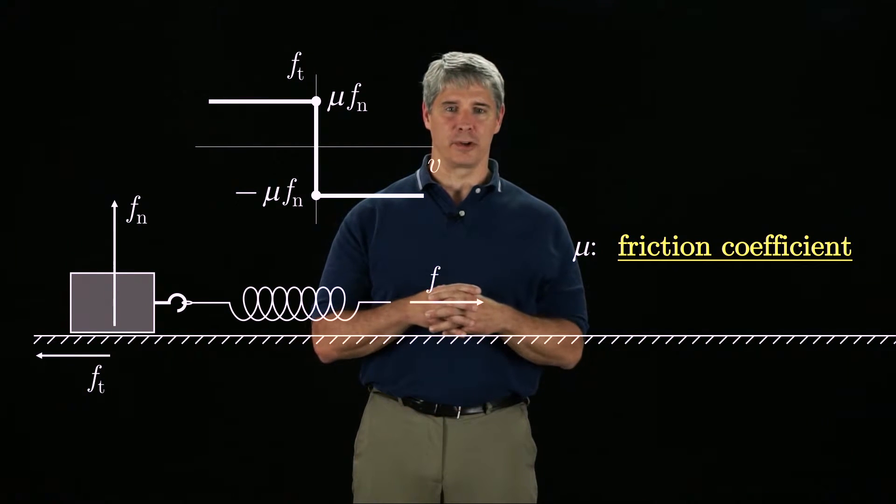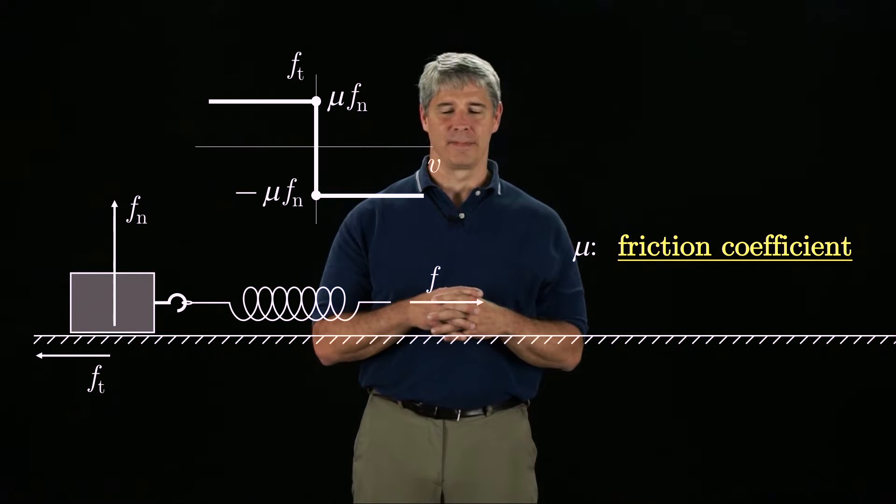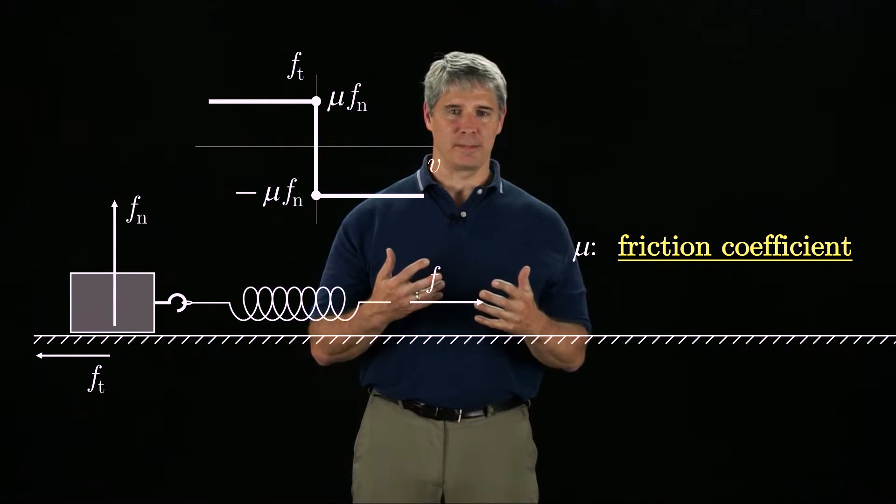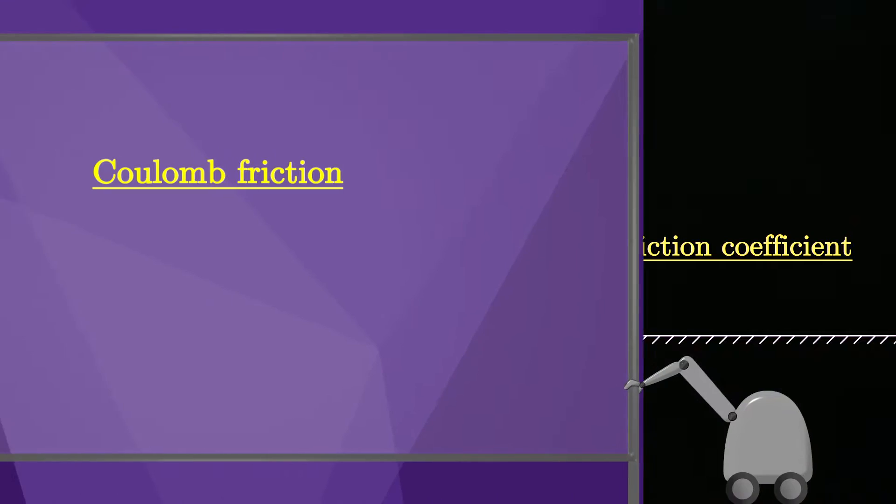By this model, the friction force depends only on the direction of sliding, not the speed of sliding. This empirical approximate model of dry friction is called Coulomb friction.